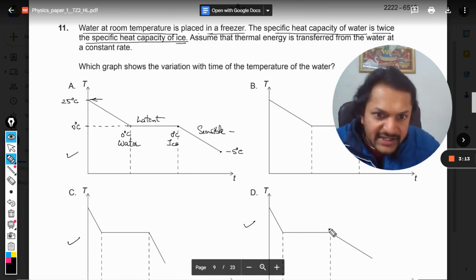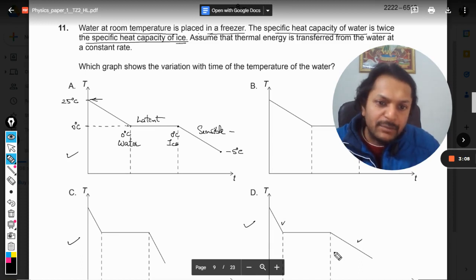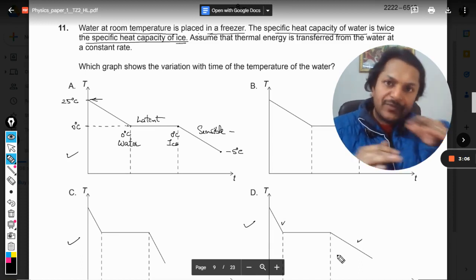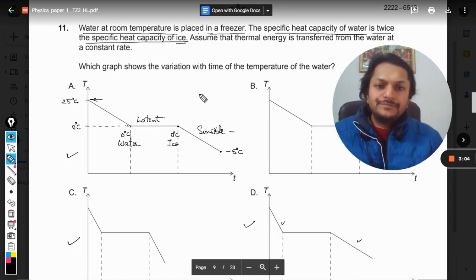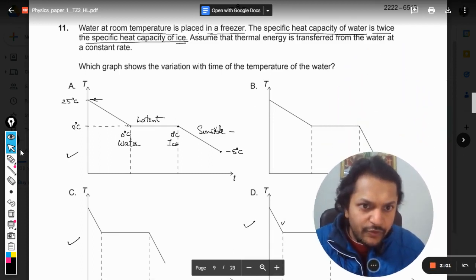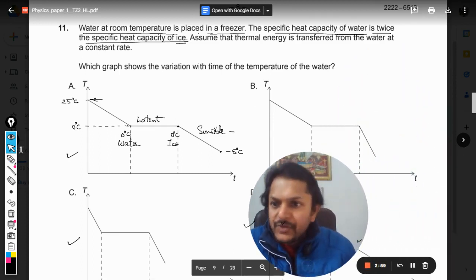But the only thing is that the slope is different. Like for example, in option D you see the slope is sharper, but here the slope is a little slant. So in option B...